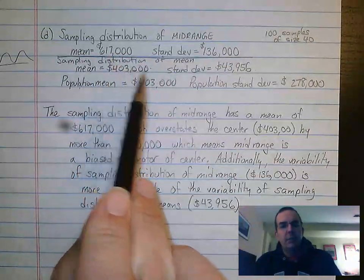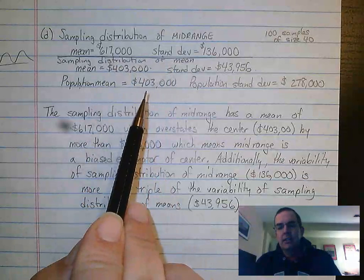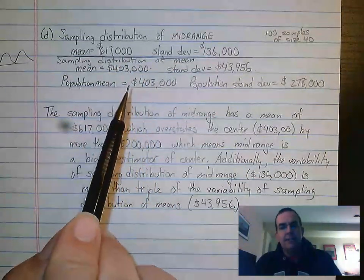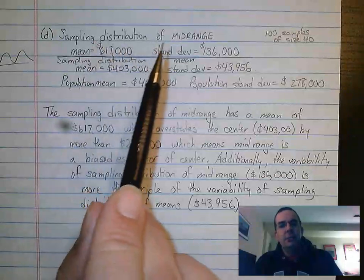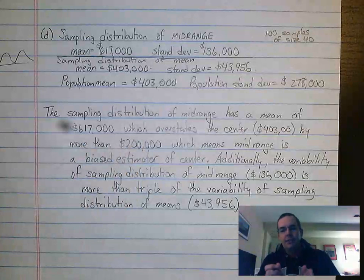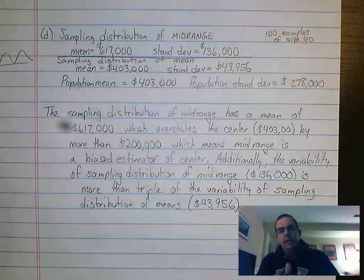That is way off from the real answer. Whereas if we look at the sampling distribution of means, they're the same. So what we have is the sampling distribution of means was an unbiased estimator. The sampling distribution of mid-ranges is a biased estimator. So bias all has to do with how close you are to the real answer.